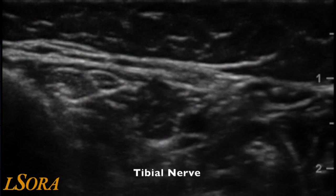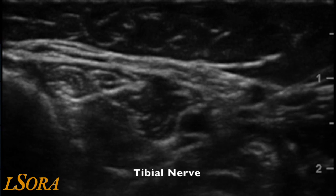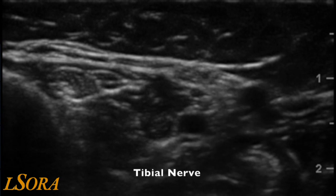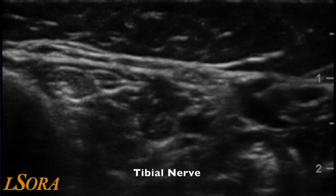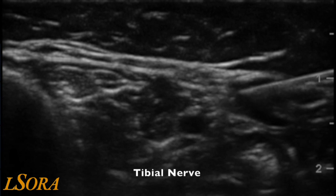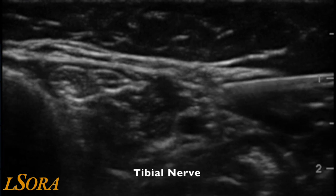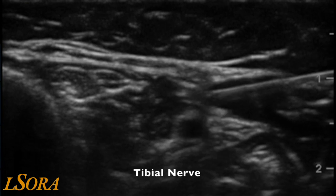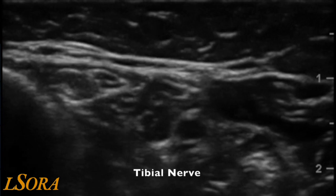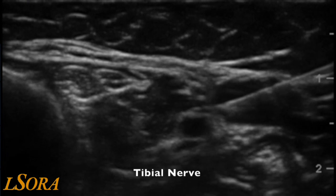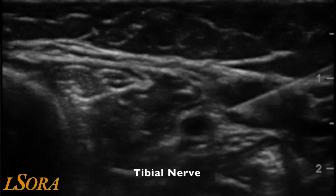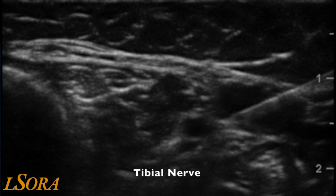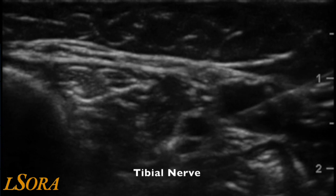In this video of a tibial nerve block, you see the needle introduced from the right-hand side of the screen, or posterior. As the needle is introduced and local anaesthetic is injected, the hyperechoic tibial nerve becomes highlighted. Local anaesthetic is then hydrodissected around the nerve, taking care not to go into the posterior tibial artery or the veins.